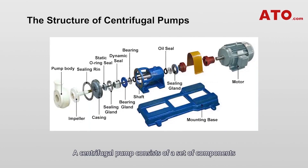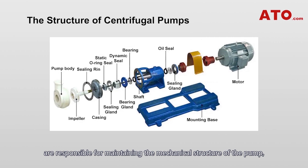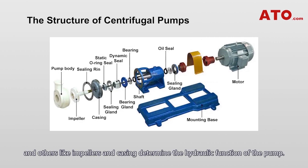A centrifugal pump consists of a set of components, of which some — for example, shaft, bearing, etc. — are responsible for maintaining the mechanical structure of the pump, and others, like impellers and casing, determine the hydraulic function of the pump.